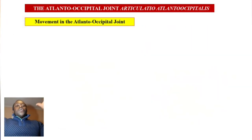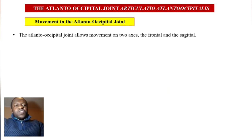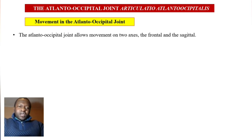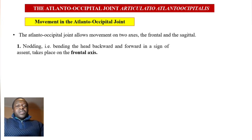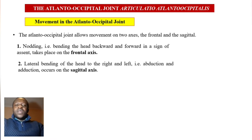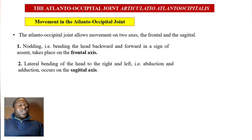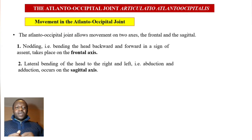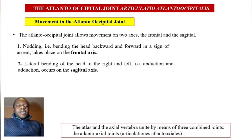The movements at the atlantooccipital joints occur on two axes — frontal and sagittal. First is nodding: bending the head forward and backwards in a sign of assent, taking place in the frontal axis. The second is lateral bending of the head to the left and to the right — abduction and adduction — which takes place in the sagittal axis.